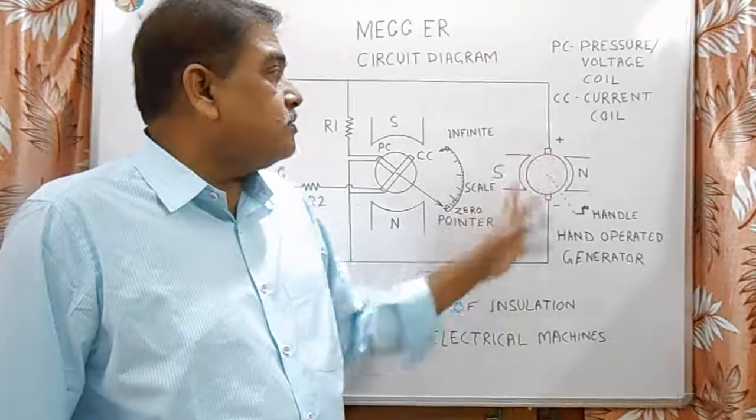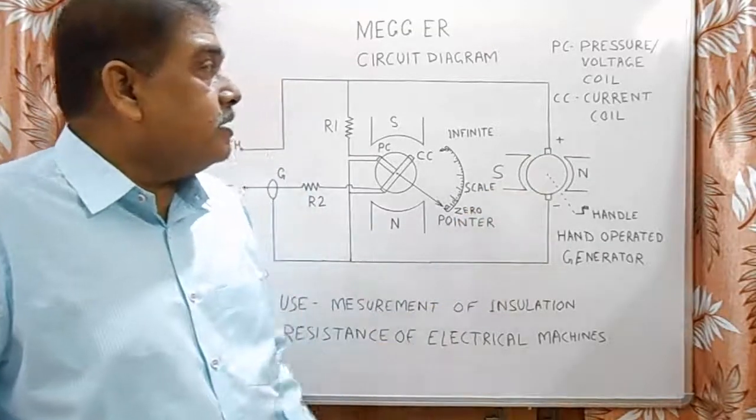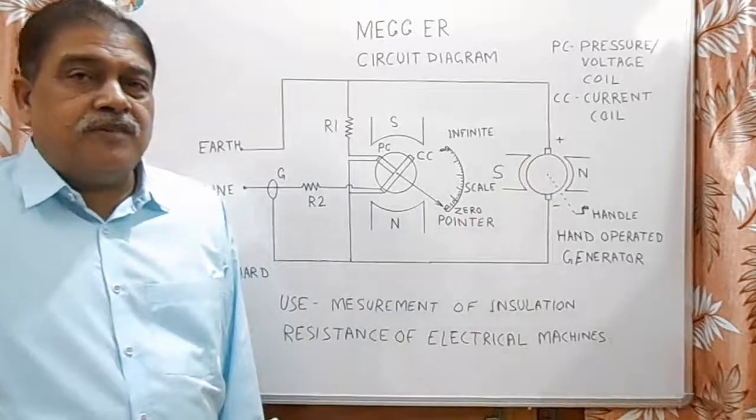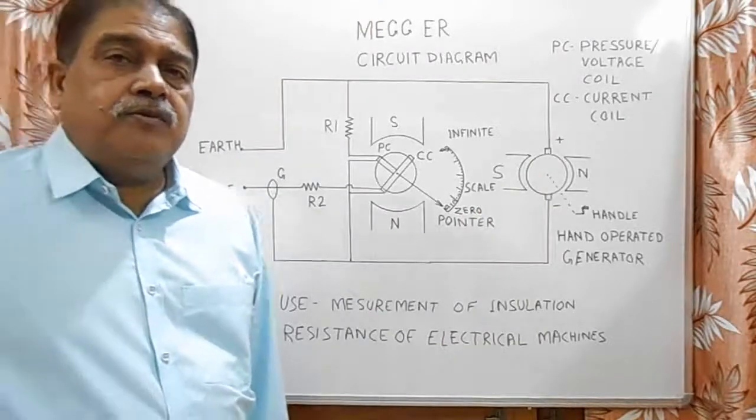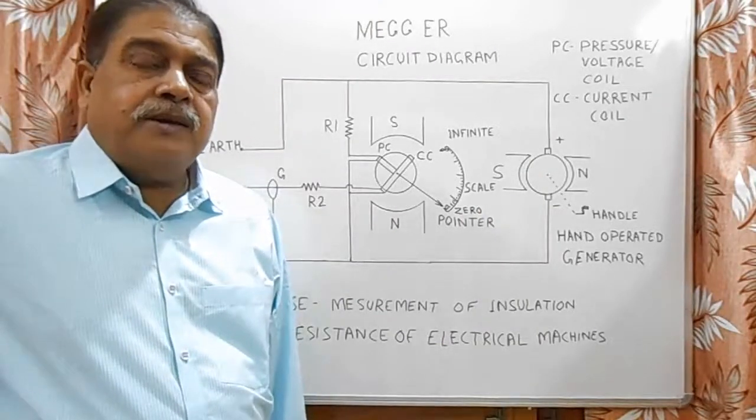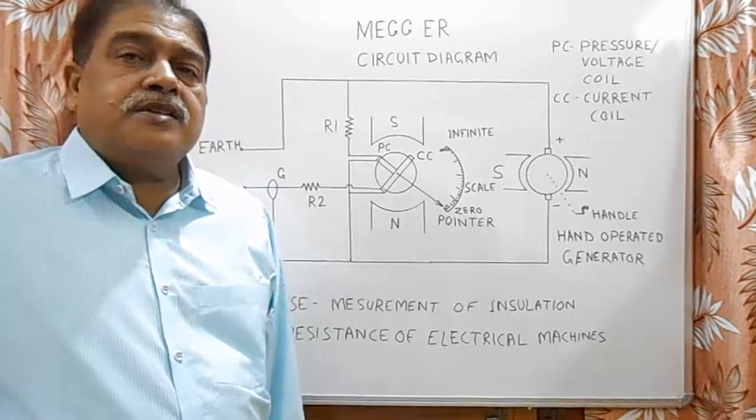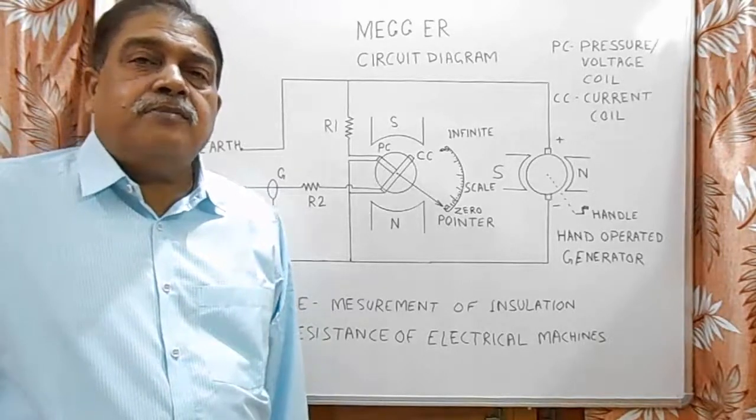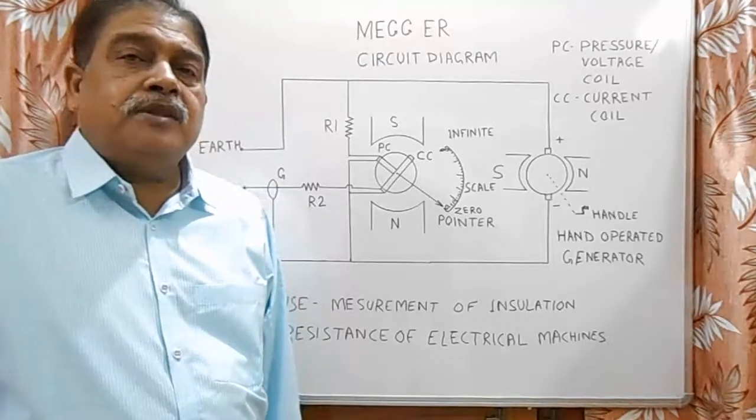So it gives a constant voltage for working of Megger. Here Megger comes in different ranges: 50V, 250V, 500V, 1000V, and for HD machines it comes in 2.5kV and 5kV range.